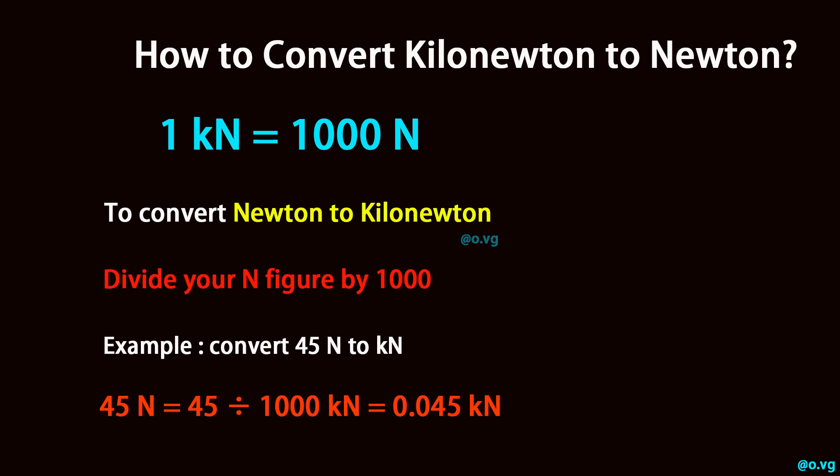Example: convert forty-five newton to kilonewton. Forty-five newton equals forty-five divided by one thousand kilonewton, which equals zero point zero four five kilonewton.